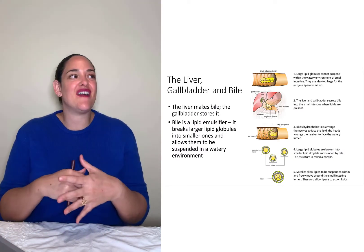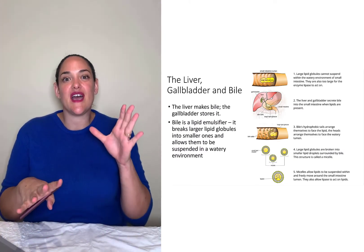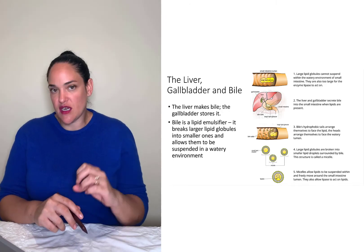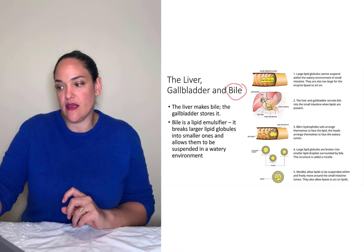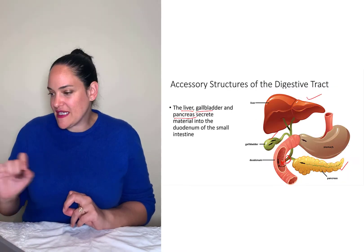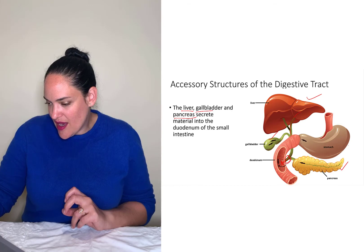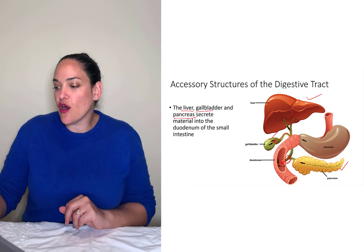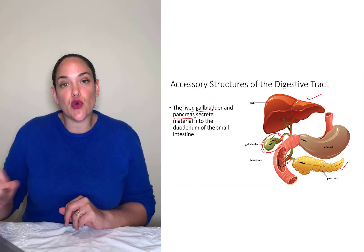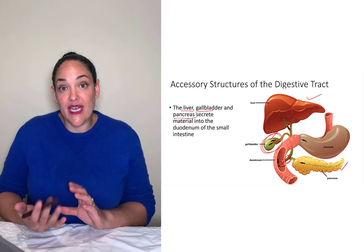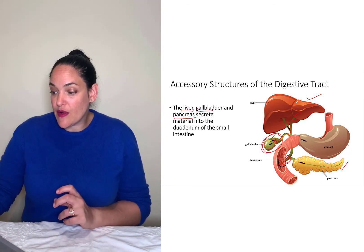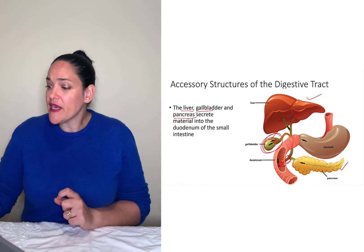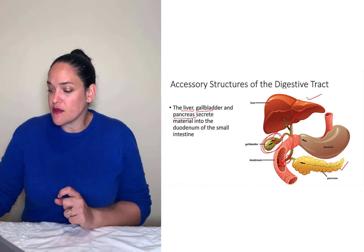Like the pancreas, the liver has many different functions, and one of them is digestive. The liver synthesizes and releases something called bile. As shown on the diagram, the liver makes bile, which can then go up and get stored in the gallbladder. So the gallbladder is actually a storage location for bile. When we need bile — and we need bile to digest lipids — the gallbladder can release it into the duodenum, and the liver can also release some directly into the duodenum.